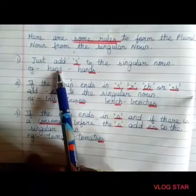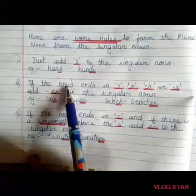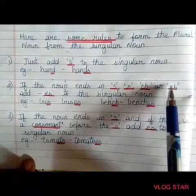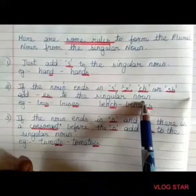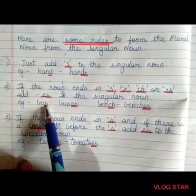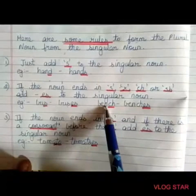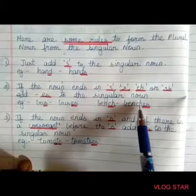The second rule: if the noun ends in 's', 'x', 'ch', or 'sh', we add 'es' to the singular noun. Example: bus — here the noun is ending with 's', so to form a plural form, we have to add 'es'. Second word: bench — here the noun ends with 'ch', so to form a plural form, we have to add 'es'.